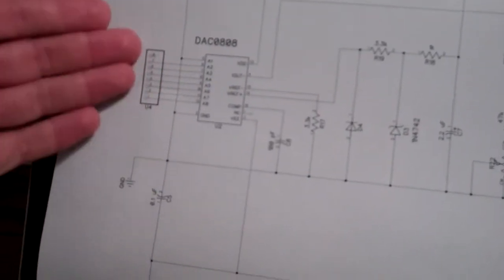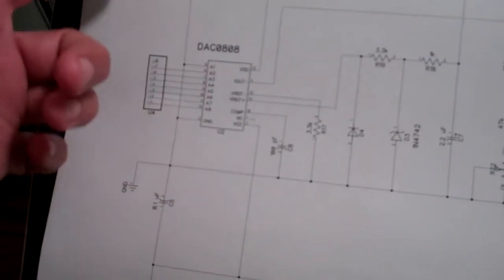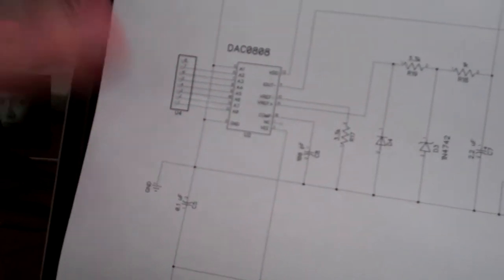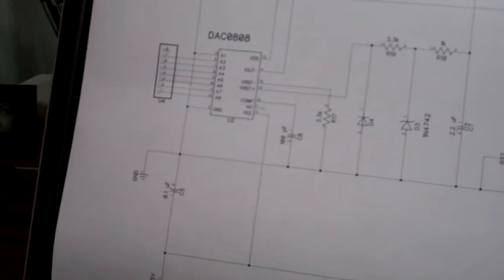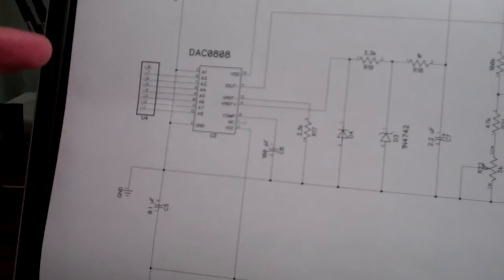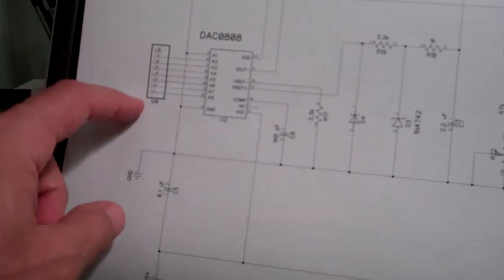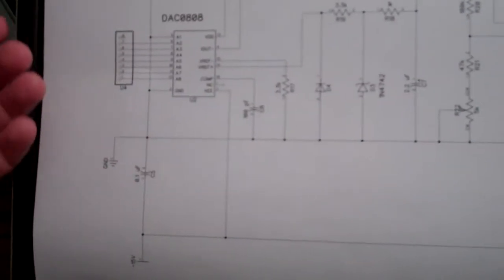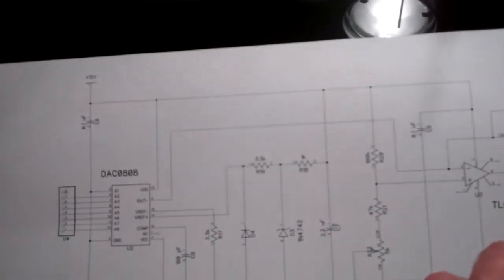You don't have to use the full 255 steps that are in here. You can use anything between zero and 255. In your mind, you want to have an idea of what your lowest number is and what your highest number is and what that's going to correspond to in terms of your voltage.